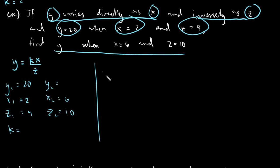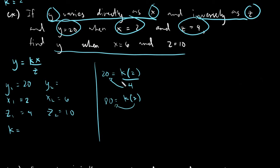Solving for k using set 1: 20 is equals to k times 2 divided by 4. Transpose the 4 — it becomes times 4, so 4 times 20 is 80. Then transpose the 2 to the other side as division. So 80 divided by 2 gives us k is equals to 40. We have our k already.